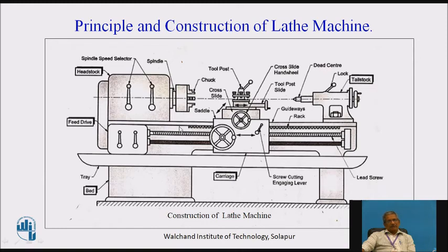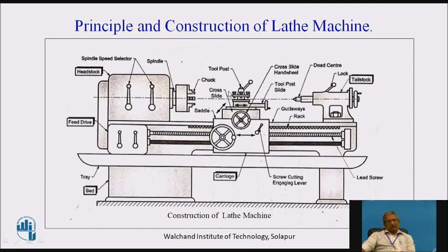With the carriage, turning operation can be carried out because it moves parallel to the axis. With the cross slide, facing operation is performed because the tool moves perpendicular to the axis. Above the cross slide is a compound slide, on which the tool post is mounted. The compound slide is used for taper turning and for taking light cuts. The tool post is always aligned with the axis of the lathe, and the cutting tool is mounted in it.